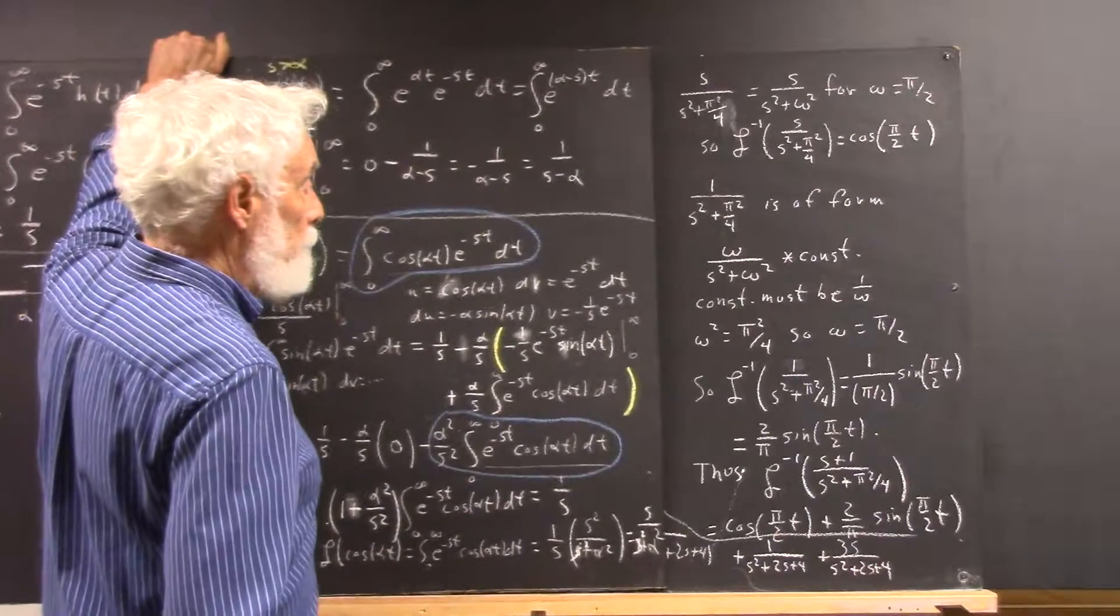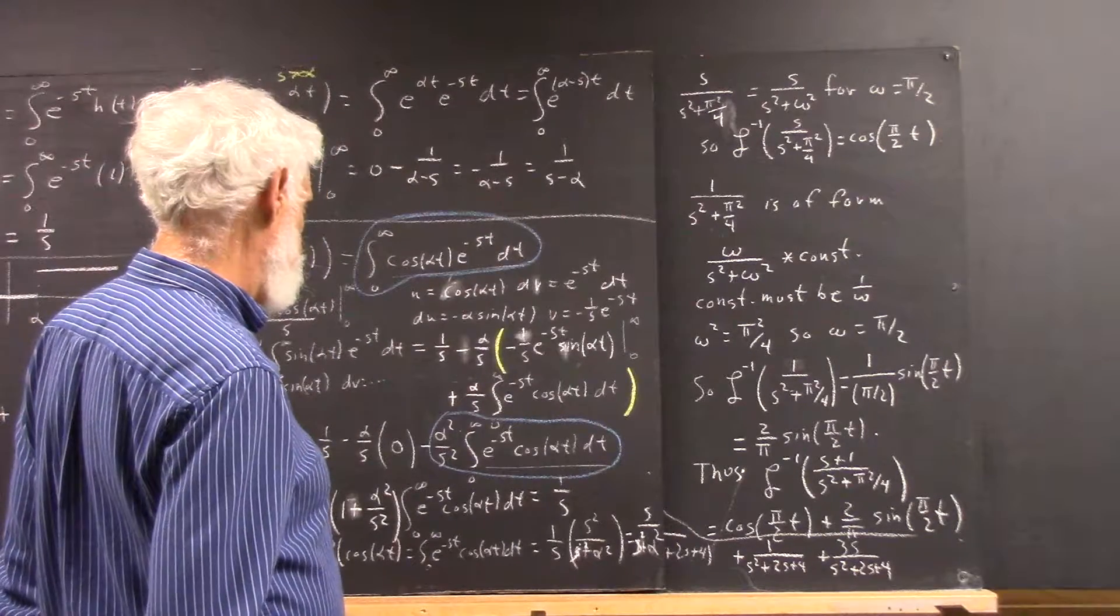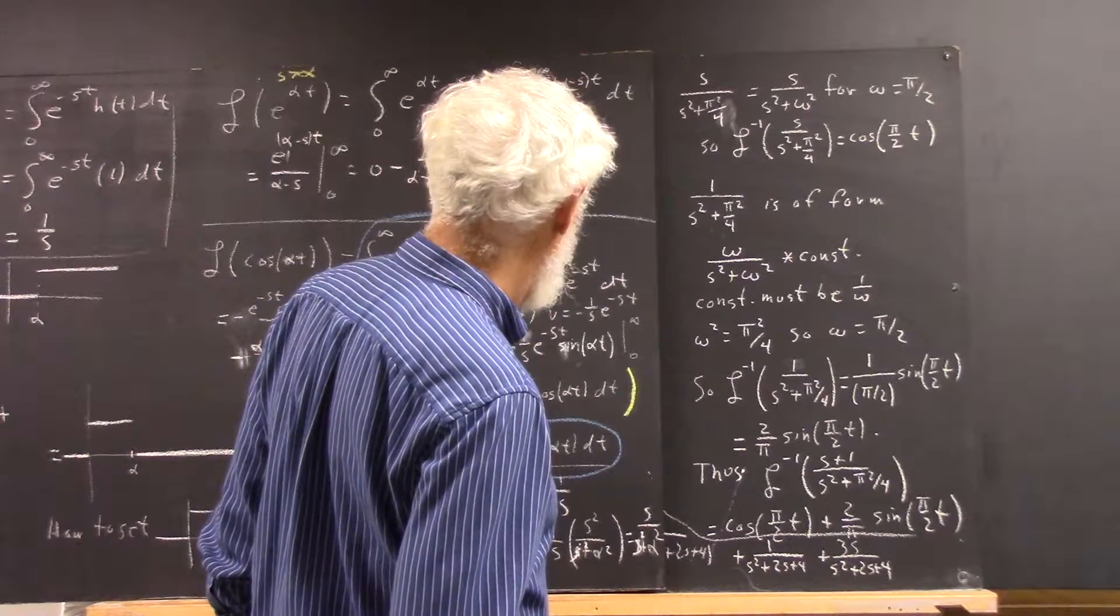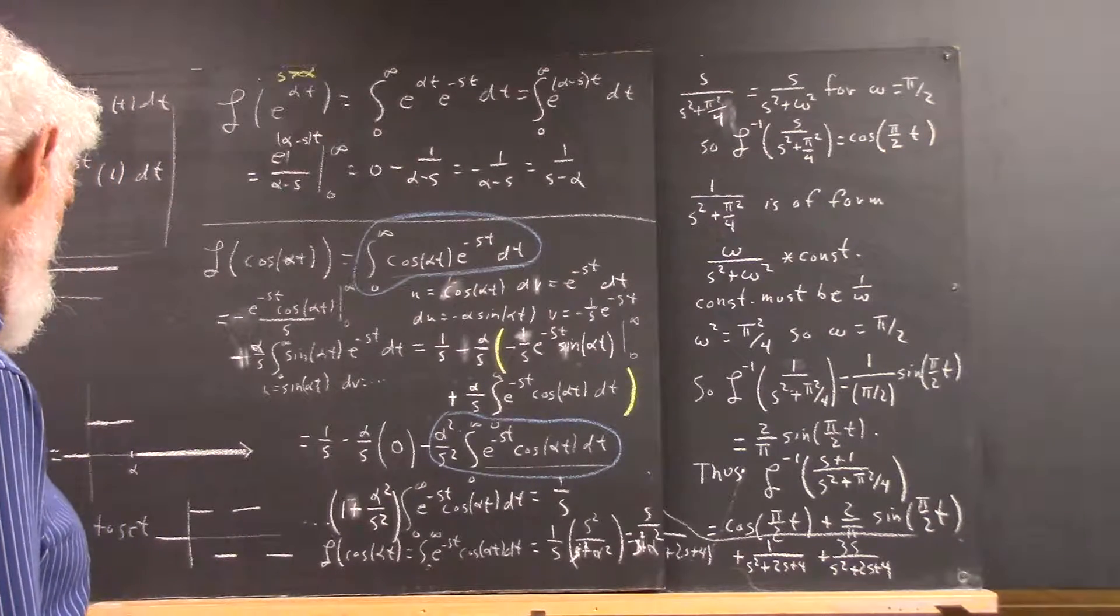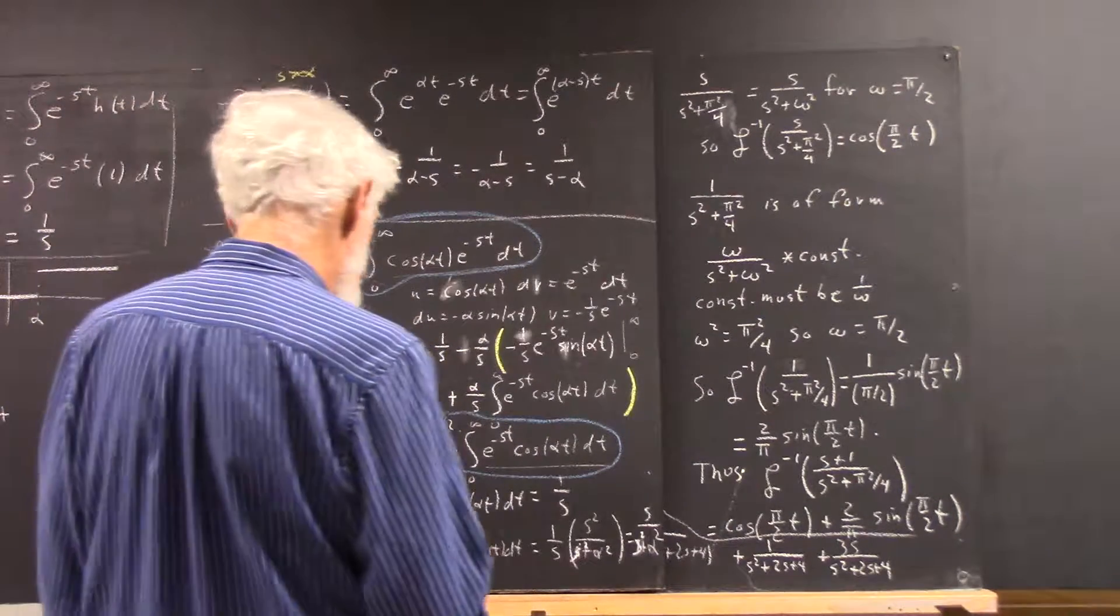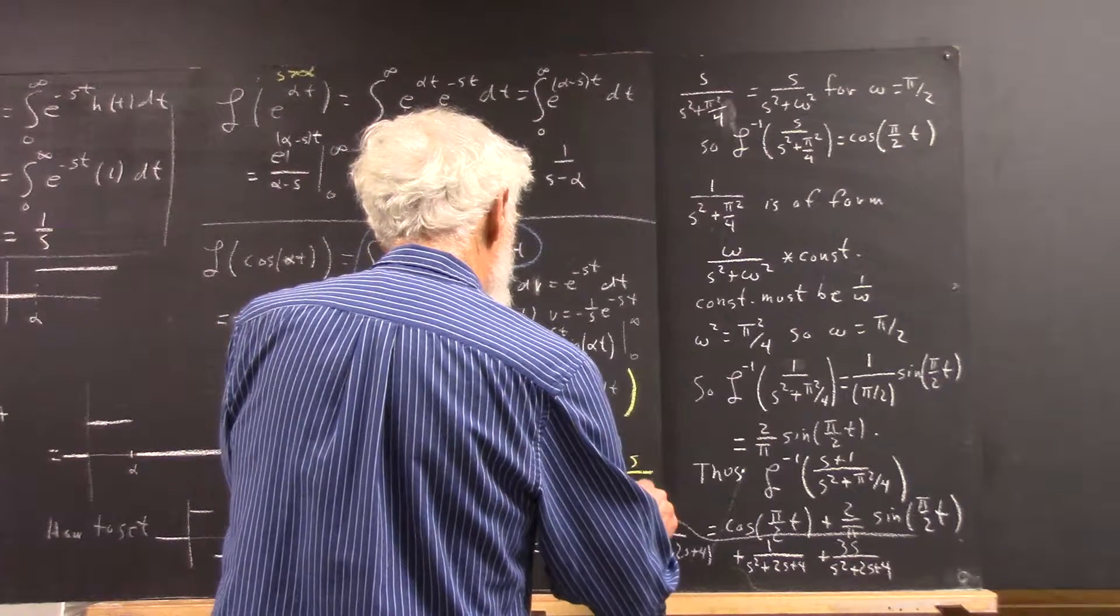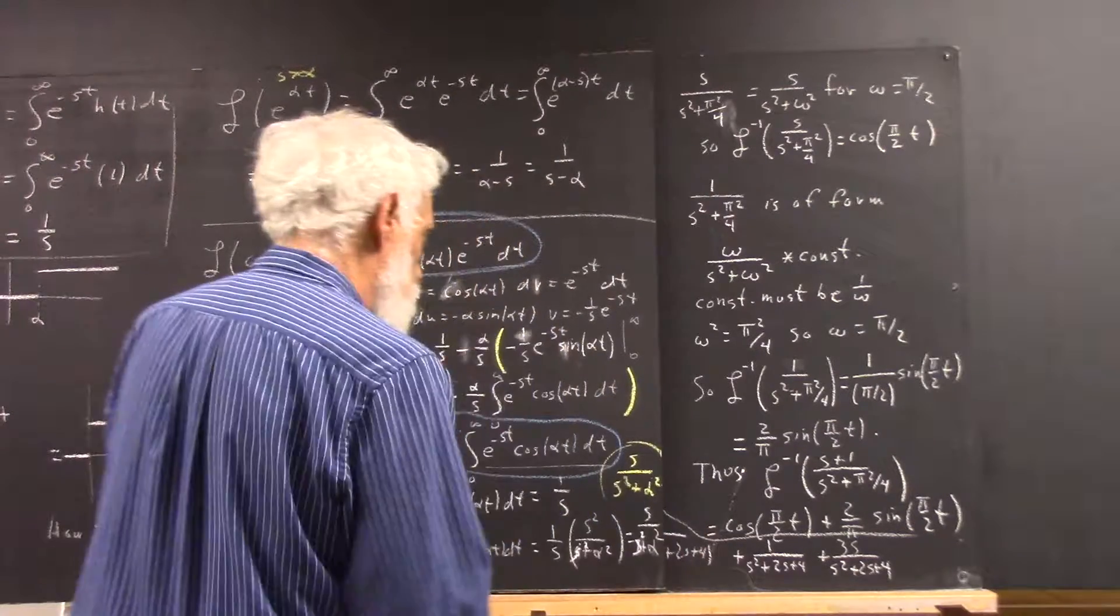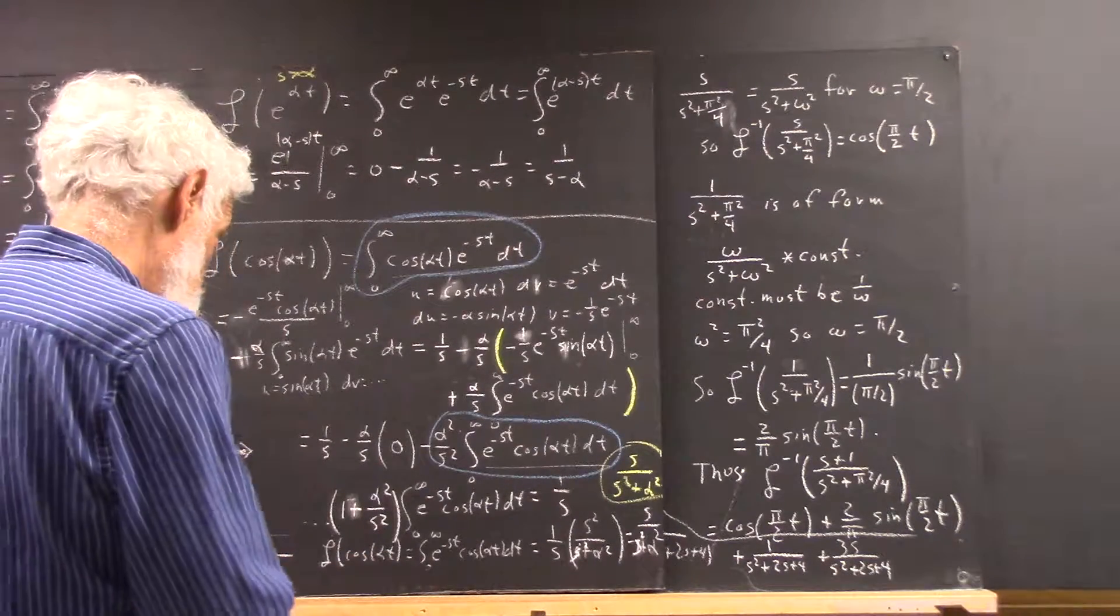But, if we move over here, actually thought that I had done this. Well, anyhow, what we have here, if we just do the algebra, is we get s over s squared plus alpha squared. And, that's our Laplace transform of the cosine of alpha t.